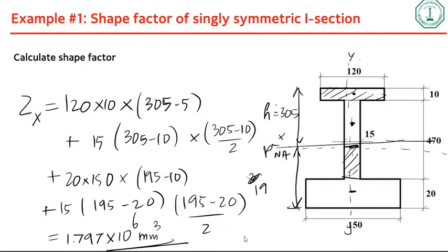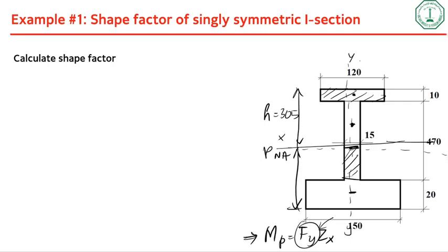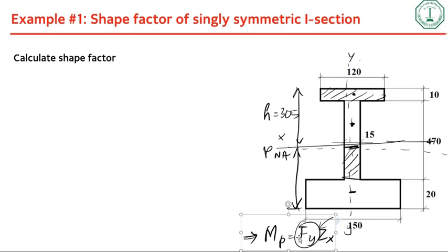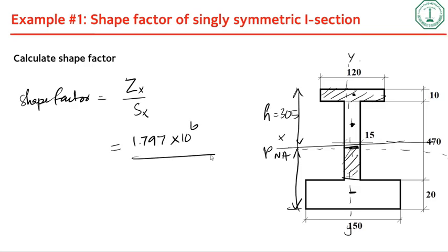The plastic moment is Mp equals Fy times Zx. Finally, the shape factor is Zx over Sx: 1.797 times 10⁶ divided by 1.268 times 10⁶, giving a shape factor of 1.41 for this particular cross-section.